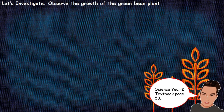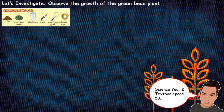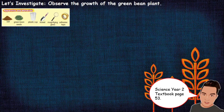For our next activity, let us investigate — we are going to observe the growth of the green bean plant. You may refer to your Science Year Two textbook on page 53. In this activity you have to prepare apparatus and materials such as soil, green bean seeds, plastic cup, trowel, magnifying glass, and adhesive tape. For our online class, you don't have to prepare this apparatus — we will go through this experiment using the slides I will share.